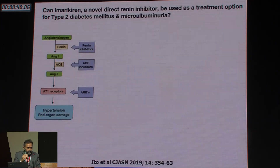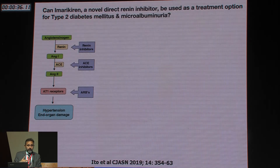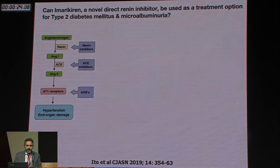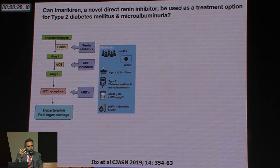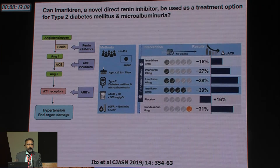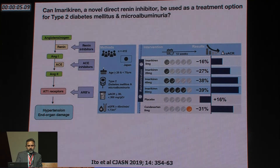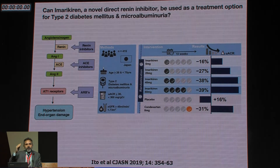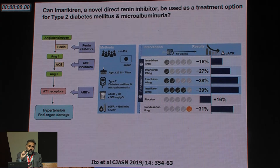An emerging drug is imarikiren, a direct renin inhibitor being tested in Japan — acting upstream of ACE inhibition or angiotensin 2 receptor blockade. A trial of about 400 type 2 diabetic patients over 12 weeks showed increasing doses of imarikiren reduced proteinuria, with the highest dose (4mg) achieving a 38% reduction — comparable to an angiotensin 2 receptor blocker. This drug may have a role if the patient cannot tolerate ACE inhibitors or ARBs, though combination data are not yet available.